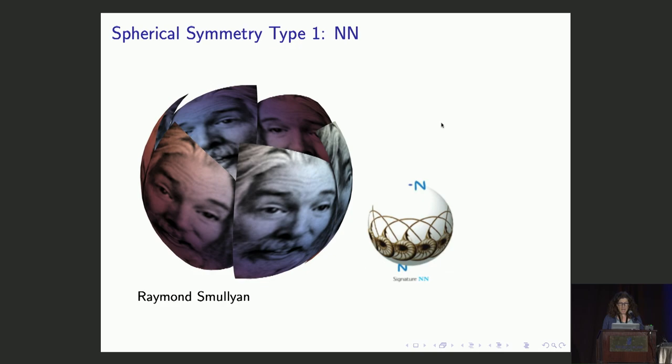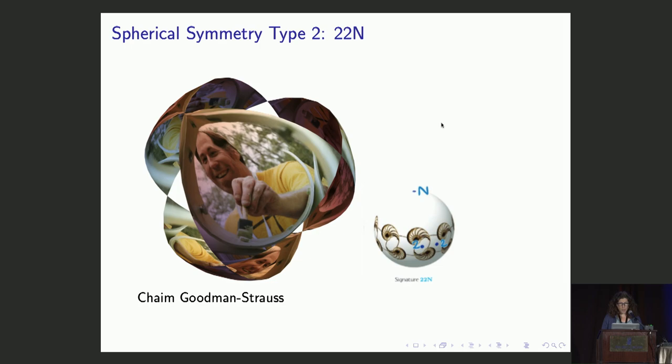So let's start out with the simple symmetry family, NN, that just has n-fold rotational symmetry along the north and the south pole, here represented by Raymond Smullyan.